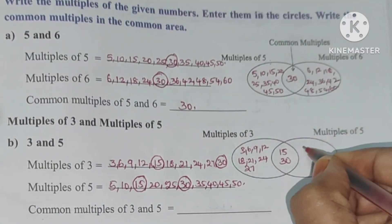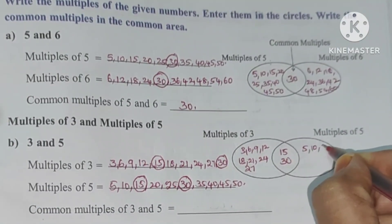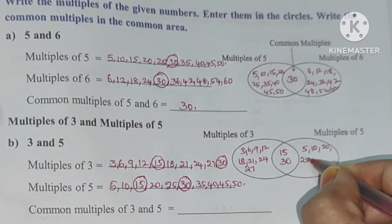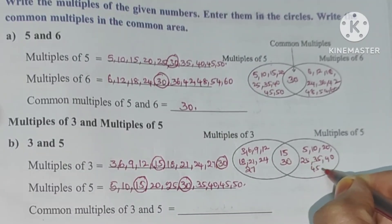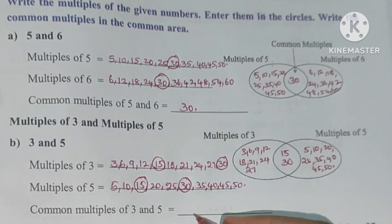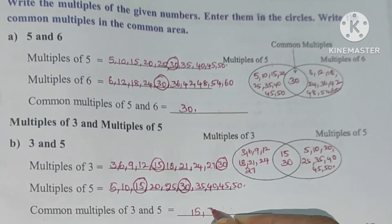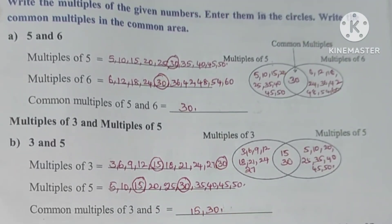So 15, 30. 5, 10, 20, 25, 35, 40, 45, 50. So common multiples equal 15, 30.